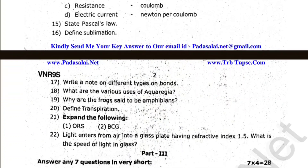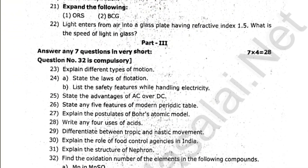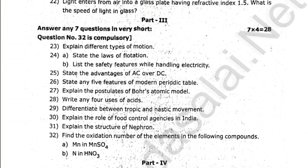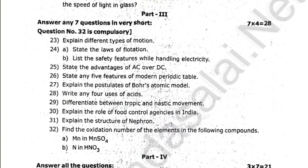Let's do two marks and four marks. Explain different types of motion. State the law of rotation. State the advantages of AC and DC. State 5 features of the modern periodic table. Bohr's atom model. Uses of acid. Tropic and nastic movement. Role of food control agencies in India. Structure of nephron.